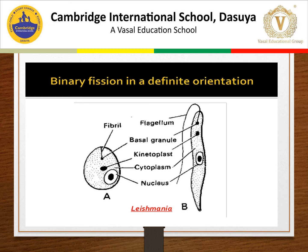In leishmania, fission occurs transversely. Leishmania is a parasitic protozoa which causes the disease Kala Azar. It has a flagella at the anterior end and its body divides by longitudinal binary fission — first two flagella are formed, then the nucleus and body divide lengthwise.